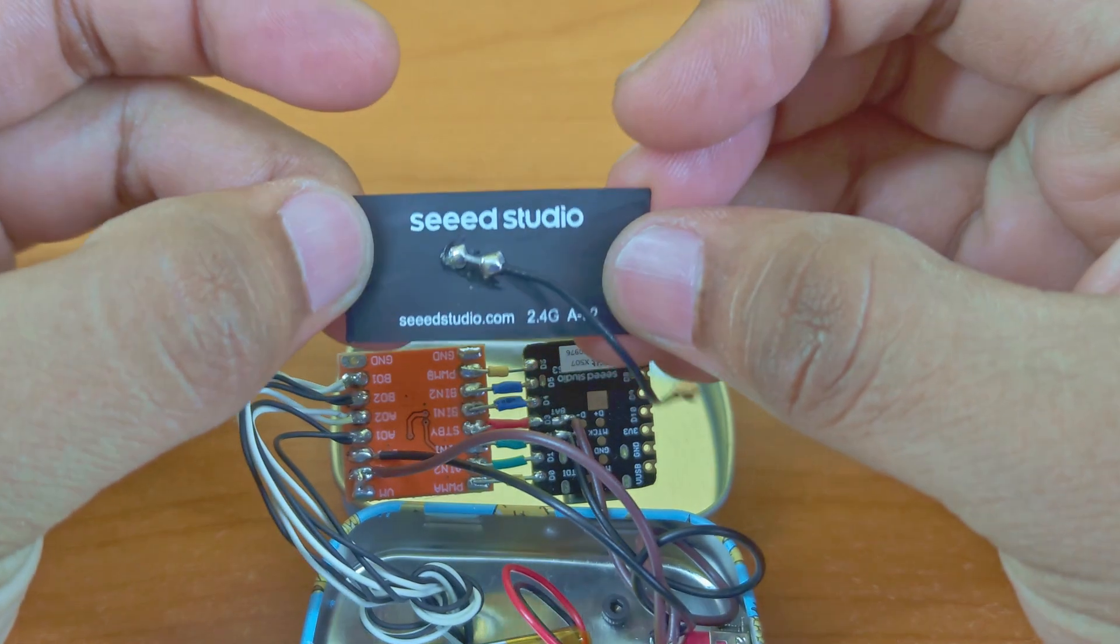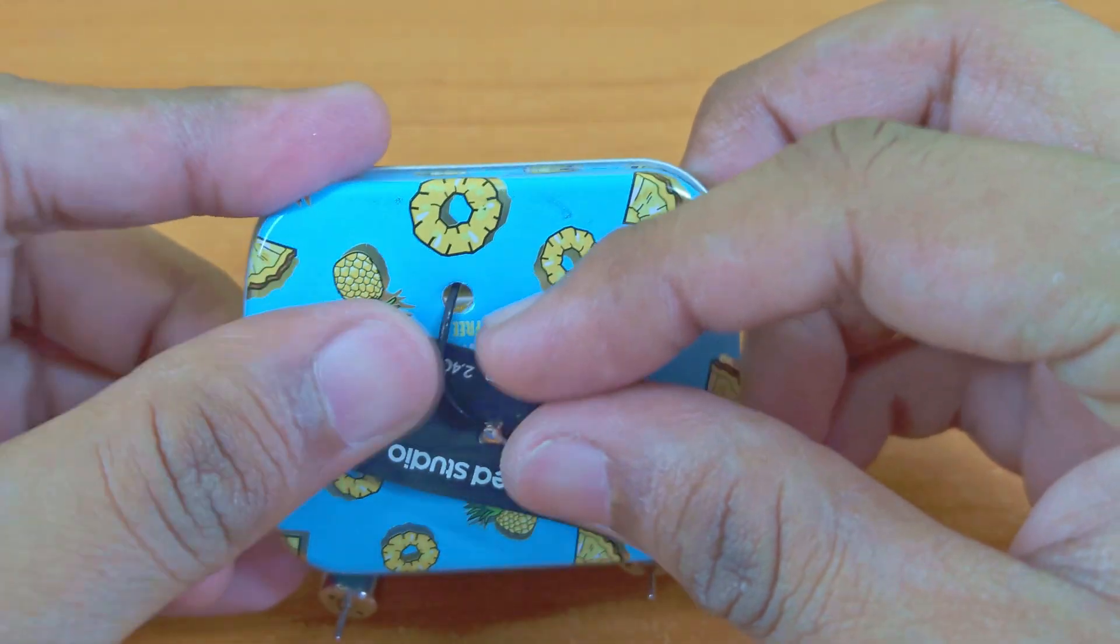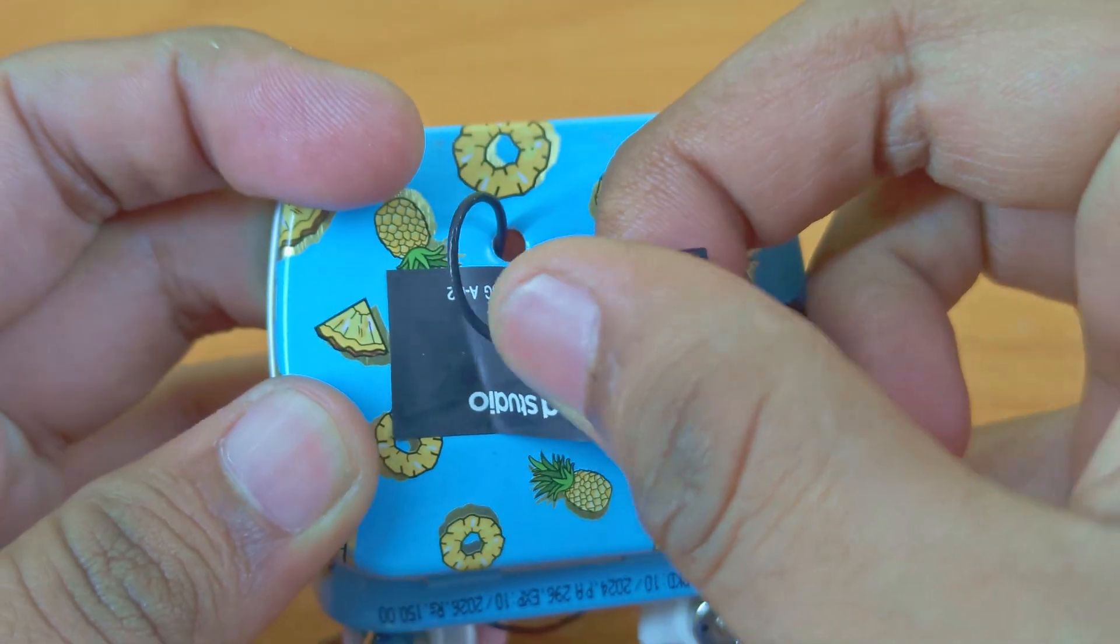The Xiao board needs an external antenna to work properly, especially if it is going to be inside this metal box. So we used the antenna that came with the board.